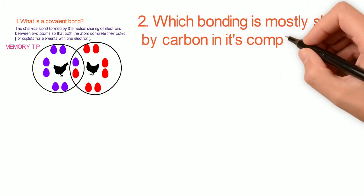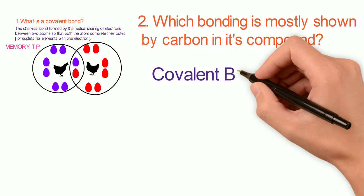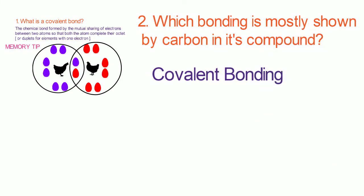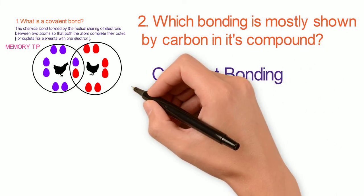Our second question is, which bonding is mostly shown by carbon in its compound? That is covalent bonding formed by sharing of electrons.